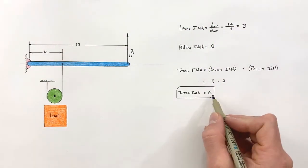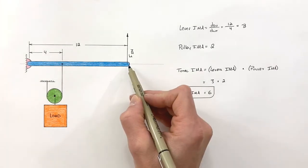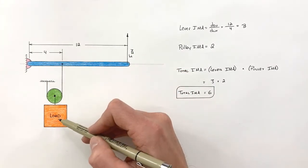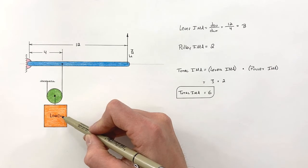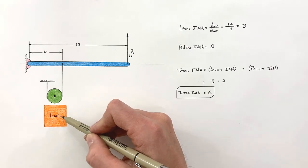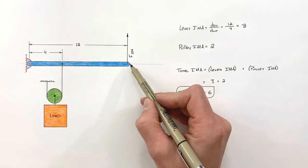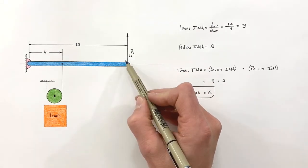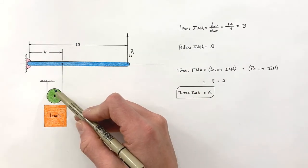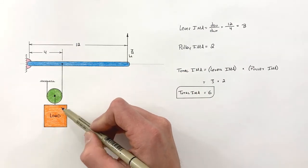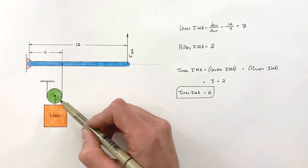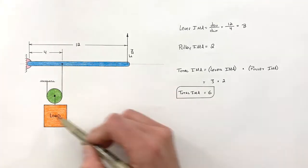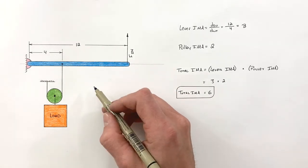This total IMA of 6 is telling us that if we push the end of this lever a certain distance, the load is only going to move one-sixth as far. Ideally, in a perfect world, that means if we put a certain force in on this end of the lever, we're going to get 6 times as much force out — but that operates on the assumption that this entire compound machine is 100% efficient.